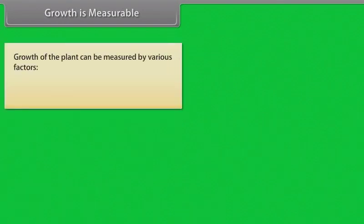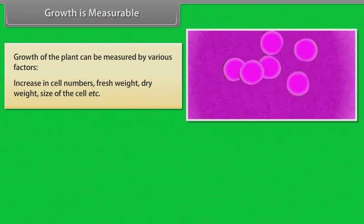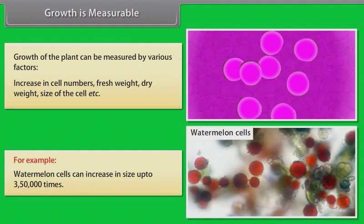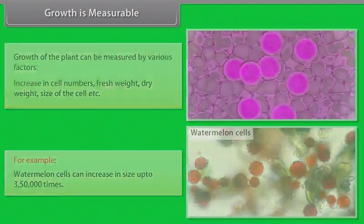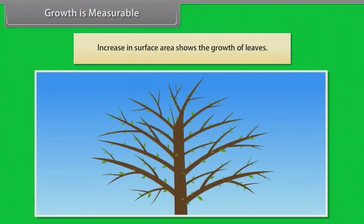Growth is measurable. Growth of the plants can be measured by various factors: increase in cell numbers, fresh weight, dry weight, size of the cell, etc. For example, watermelon cells can increase in size up to 3,50,000 times. Increase in surface area shows the growth of leaves.